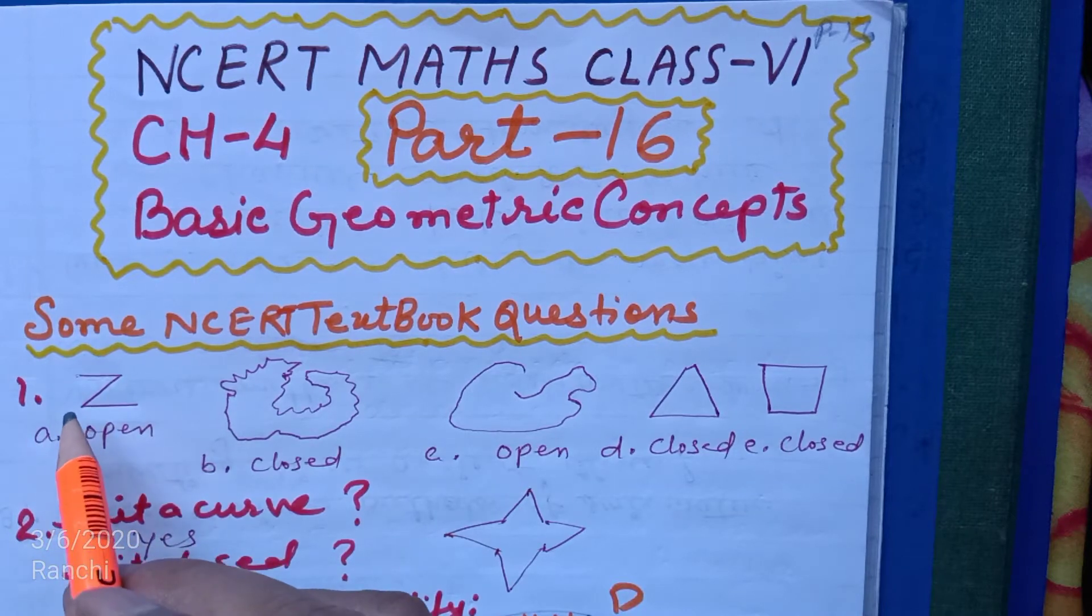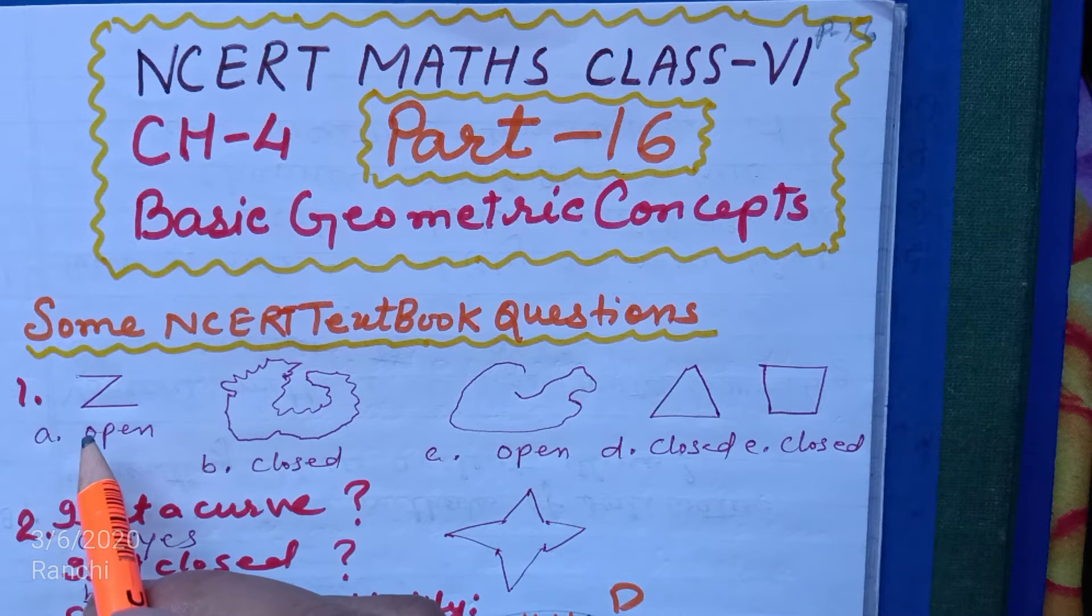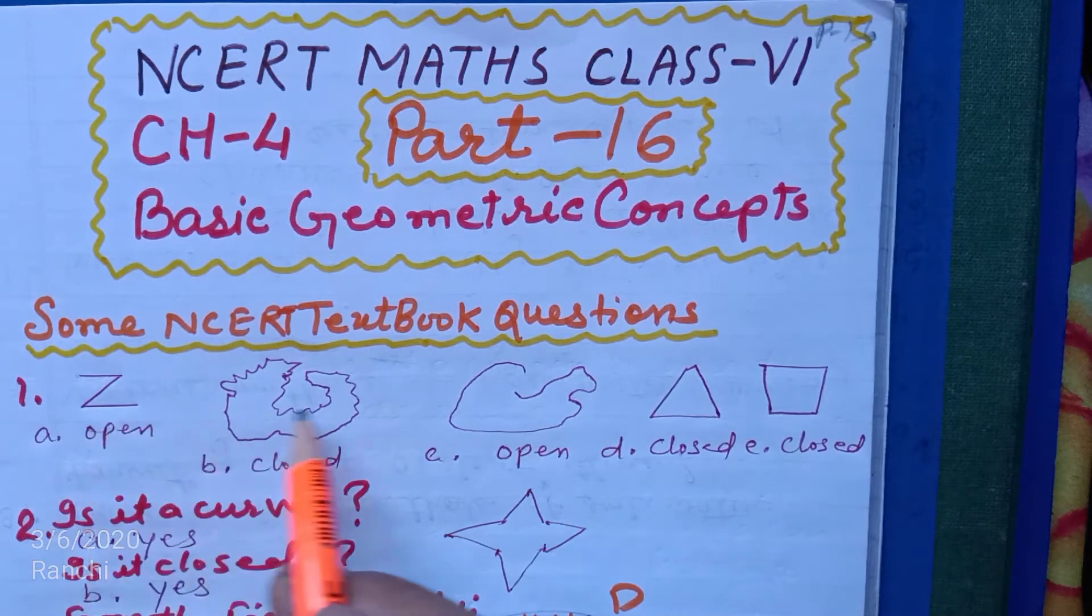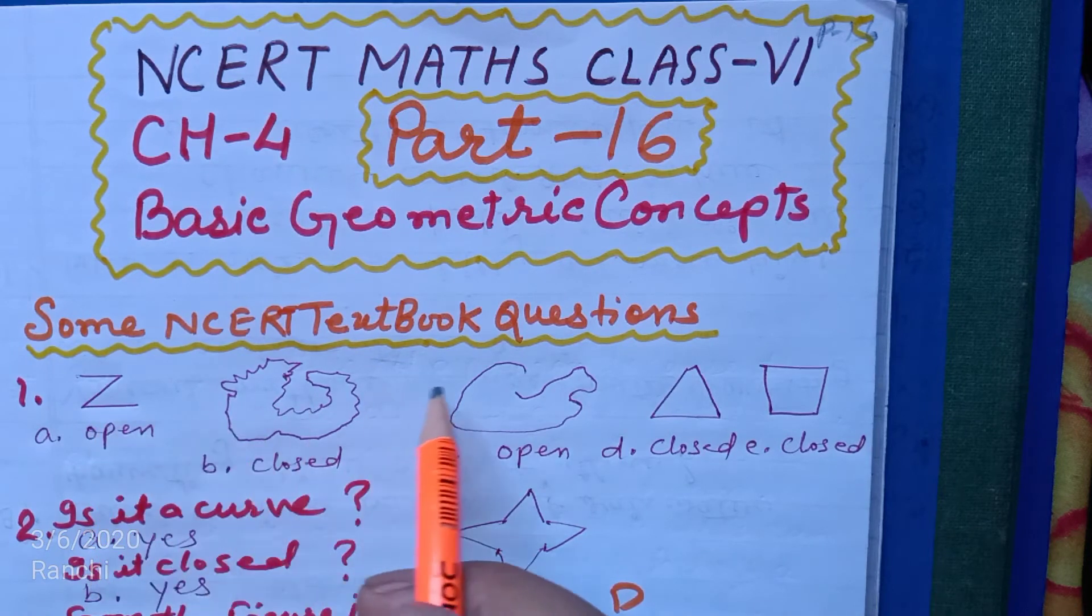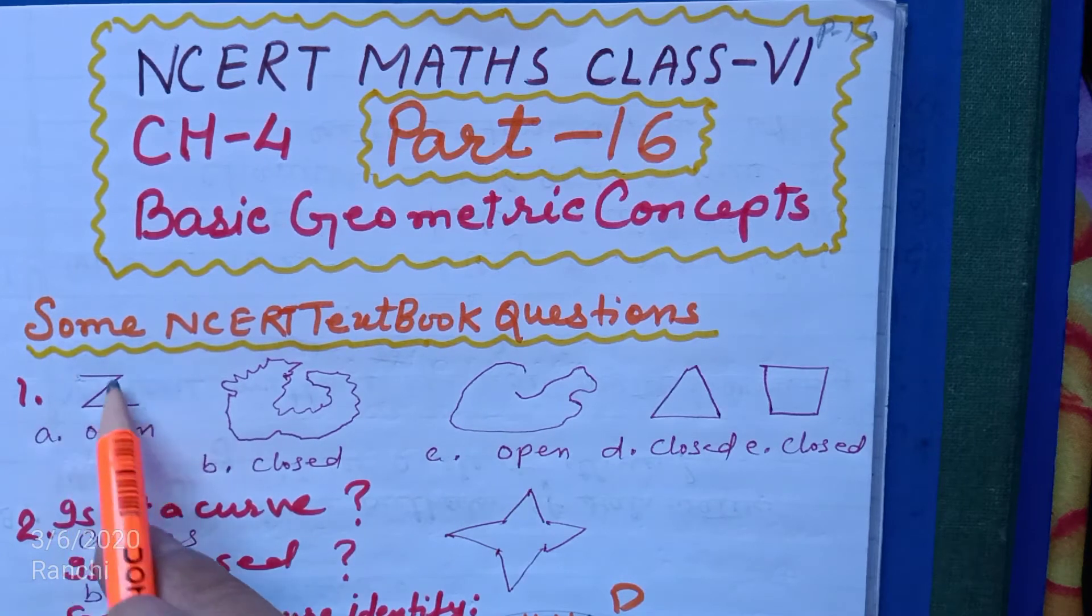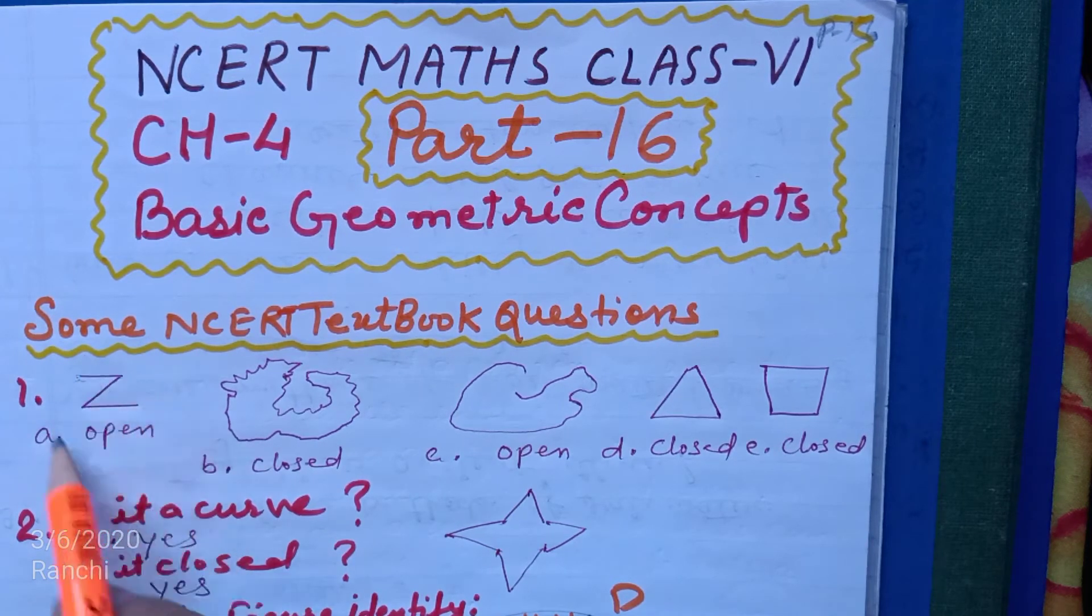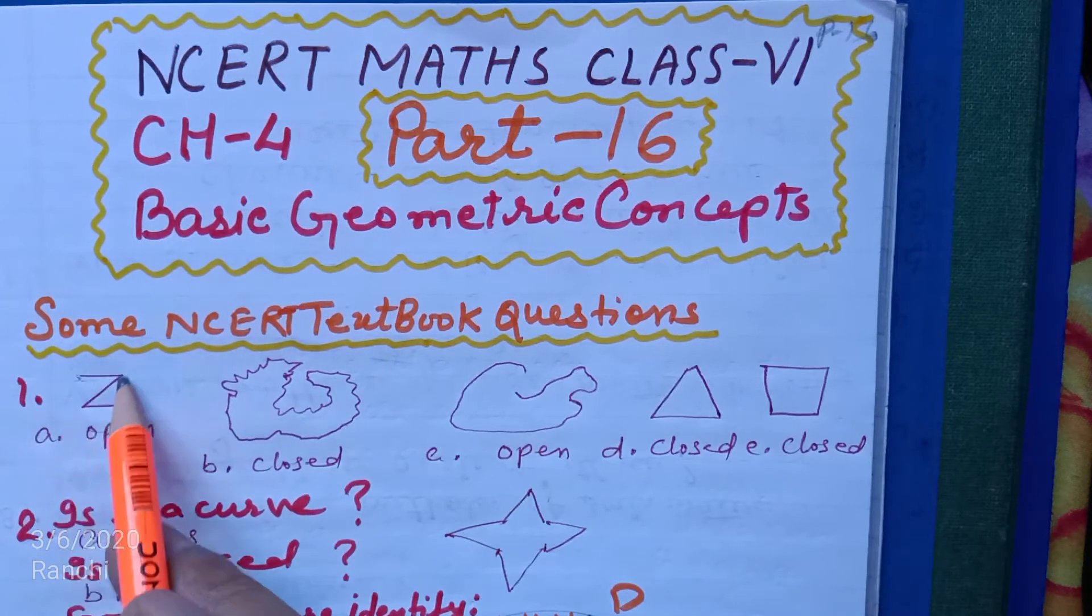First question is, classify the following curves as open or closed. These are the curves, you have to classify whether the curves are open or closed. Number A is the letter Z, an open curve. The end point and starting point are different.